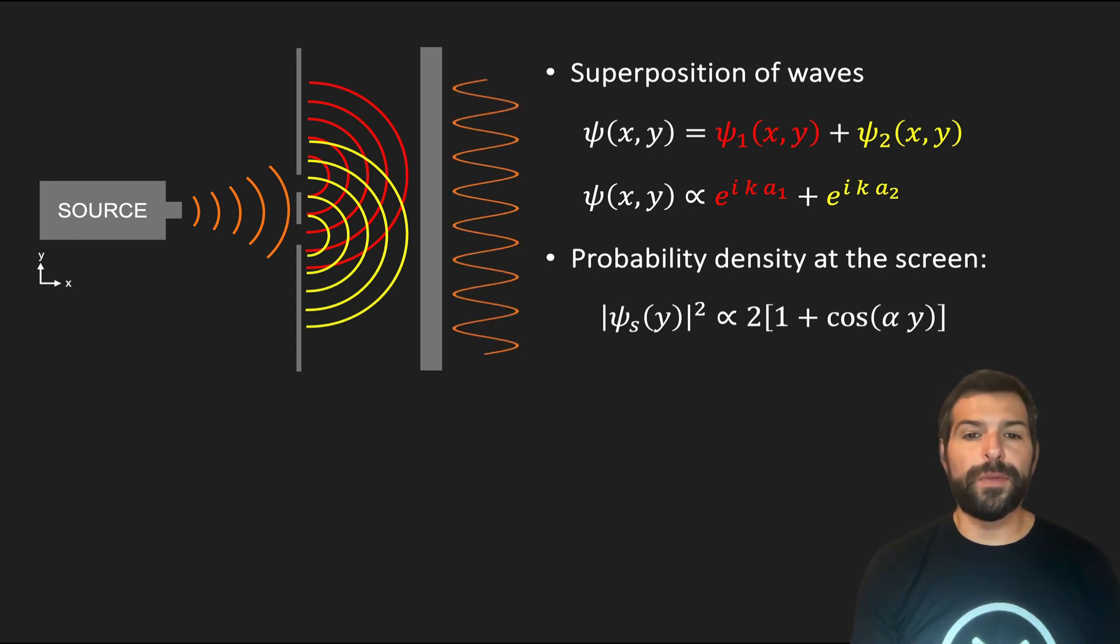It is also worth remembering that the reason we only get a cosine term without a reduction in intensity as we move away from the center of the screen is due to several simplifications in our derivation, like assuming the distance to the screen is significantly larger than the separation between the slits, ignoring single slit diffraction, and assuming we were dealing with just plane waves instead of a more realistic wave function, like a wave packet.